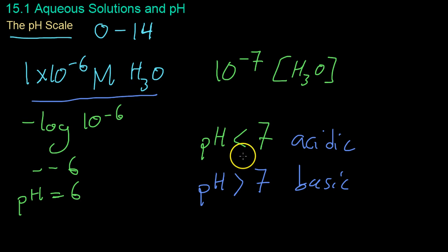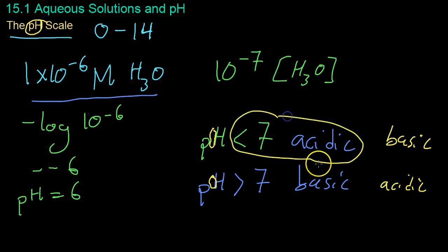The reverse is true for pOH. If you have pOH of less than 7, then it's basic, and a pOH of greater than 7, then it's acidic. However, we use the pH as a standard, not the pOH. Just remember that less than 7 is acidic, and greater than 7 is basic.